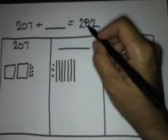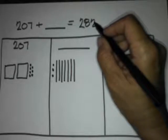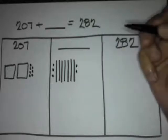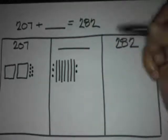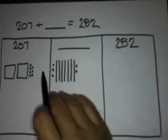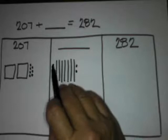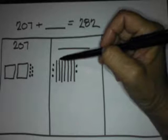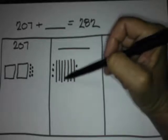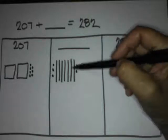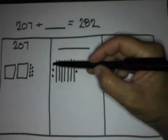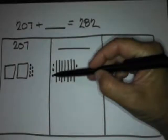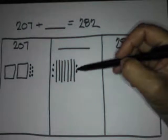Now that we're at 280, we're going to count on by 1: 281, 282. Now that we've gotten to 282, we're going to find out how much this is. So let's count on: 10, 20, 30, 40, 50, 60, 70, 71, 72, 73, 74, 75.